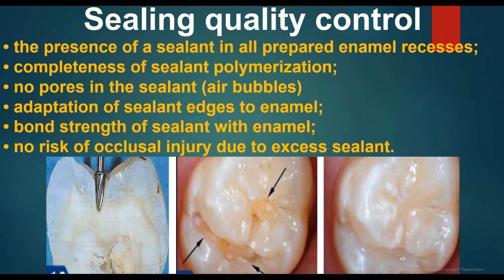Sealing quality control: check the presence of sealant in all prepared enamel recesses, complete polymerization of sealant, no pores or air bubbles in the sealant, and proper adaptation of sealant edges to enamel. Ensure no risk of occlusal injury due to excess sealant.